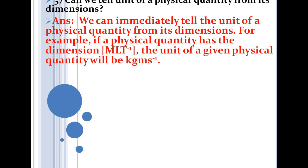The next question: can we tell the unit of a physical quantity from its dimension? In general, looking at the dimension of a physical quantity, we can write down its unit. For example, if a quantity has dimension MLT⁻¹, then its unit would be kg·m/s. However, this is not correct for all cases.